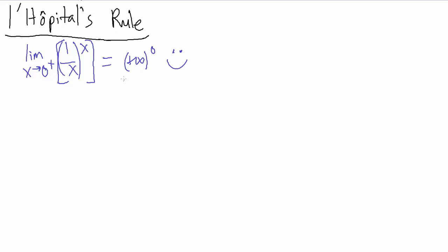This is actually pretty similar to the previous video where we had that other example with the exponential type function. When we have something in an exponent with x and have to evaluate a limit, we'll need L'Hôpital's rule. The process is the same: we use the rule from pre-calculus that e to the natural log of something equals that thing — and we use it going backwards.